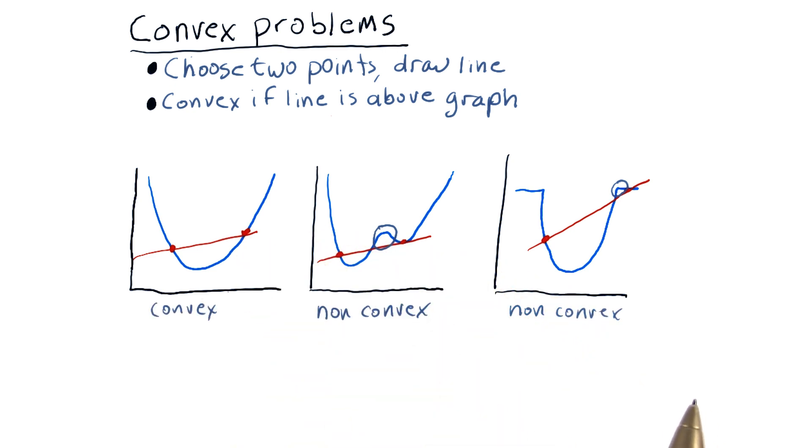So a couple things to observe here, some properties that emerge. One is, in order for the function to be convex, it has to have only one local minima.